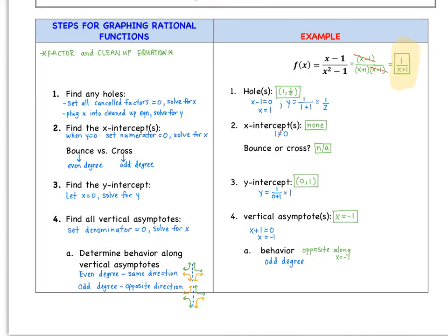Now we find any holes. You get a hole if any factors cancel. In this case, the x − 1 factors canceled. To find the x-value, set the canceled factor equal to 0: x − 1 = 0, so x = 1. Then plug that into the cleaned-up equation to solve for y. Our cleaned-up equation is 1 over (x + 1), so y = 1/(1 + 1) = 1/2. We have a hole at (1, 1/2).